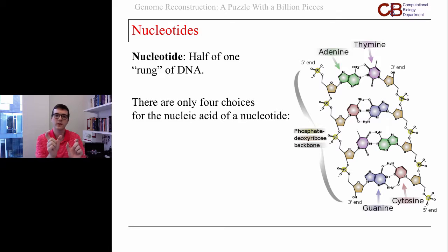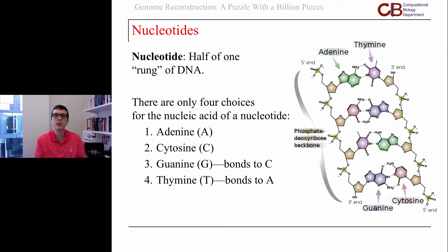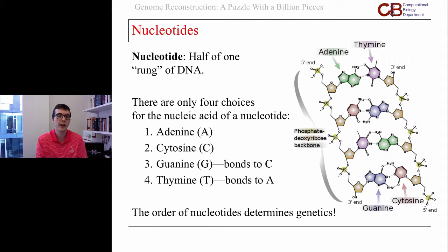There are four possible choices for the nucleic acid at each nucleotide. We think of these as A, C, G, and T — or adenine, cytosine, guanine, and thymine. The order of these letters is what determines your genetics.